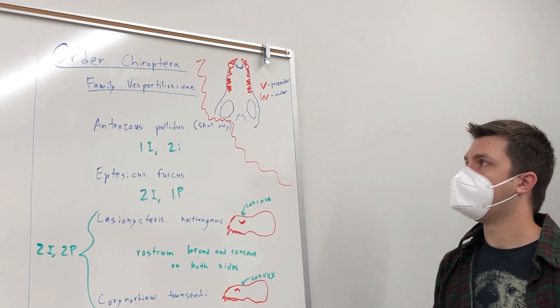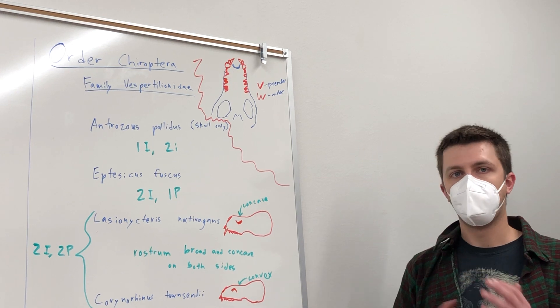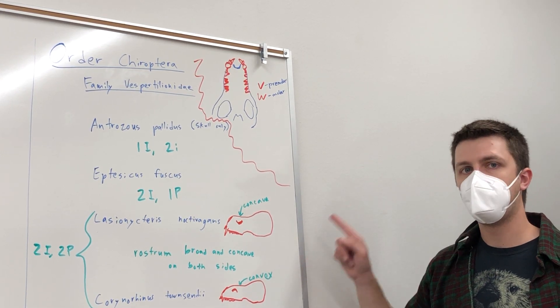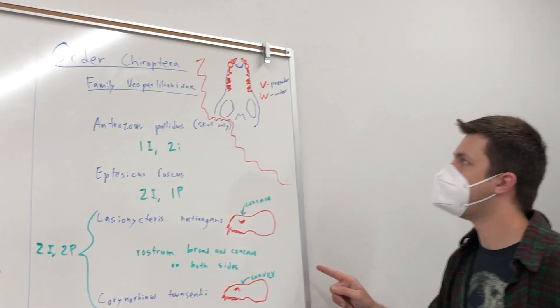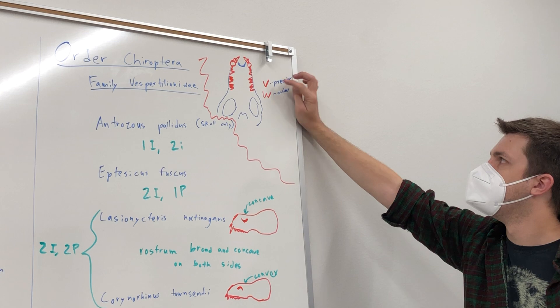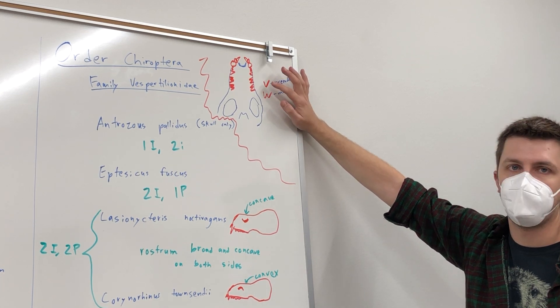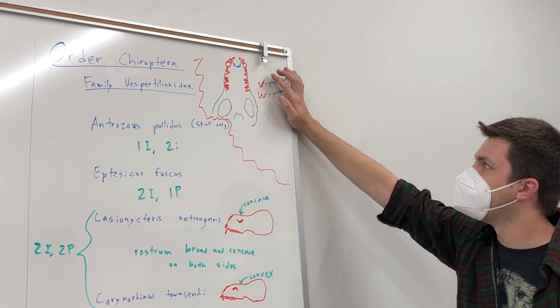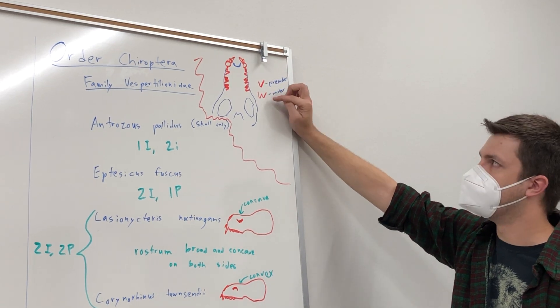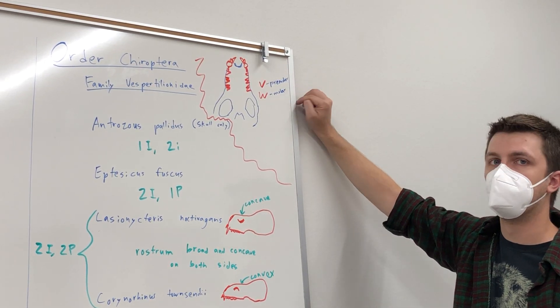I've mentioned before that it's often difficult to tell apart premolars and molars. In bats, this is one of the cases where we can tell the difference. And that difference is whether the premolar is V-shaped, so that's one single zigzag, or W-shaped with two. That's the premolar versus the molar.